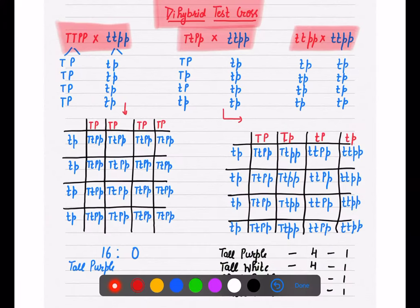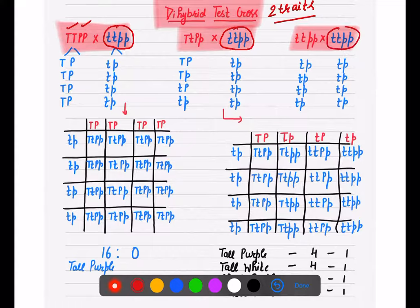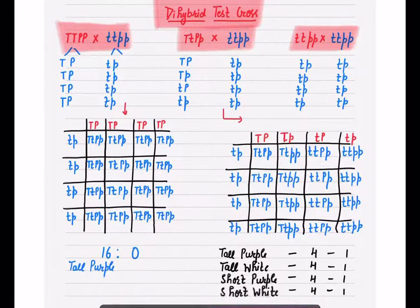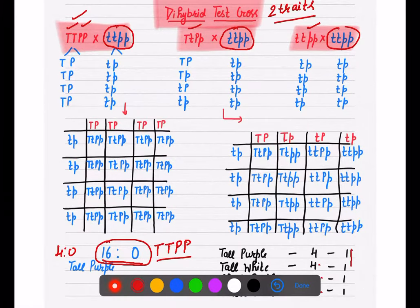Now for a dihybrid test cross — if you are given two characters, say tall and purple, the homozygous recessive is still crossed with the unknown. In monohybrid the ratio was 4:0; here in dihybrid it becomes 16:0 if the unknown genotype is purely homozygous dominant. If you get a 4:4:4:4 ratio, the genotype is heterozygous.